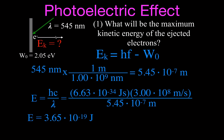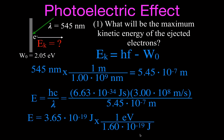In order to use this energy in our equation, we need to match units. Since the work function is given in electron volts, and we can't subtract joules from electron volts, we convert. Using 1 electron volt = 1.6×10⁻¹⁹ joules, the joules cancel and we find that the light has an energy of 2.28 electron volts.